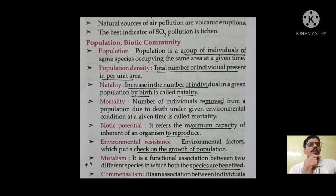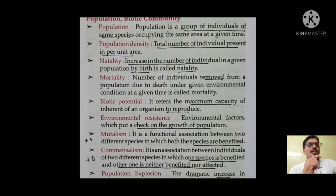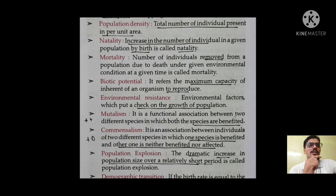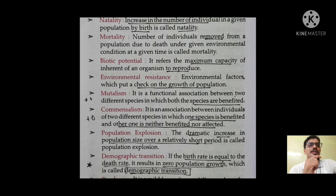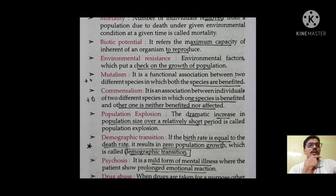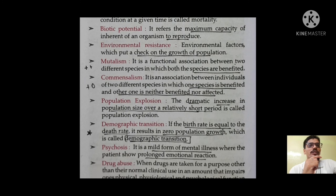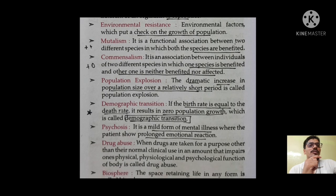Some terms to remember from population and biotic community: population is a group of individuals of the same species. Population density is the total number of individuals present per unit area. Natality is the birth — increase in the number of births in a given population. Mortality is the number of deaths in a given area. Biotic potential refers to the maximum inherent capacity of an organism to reproduce. Environmental resistance refers to environmental factors which keep population growth in check.